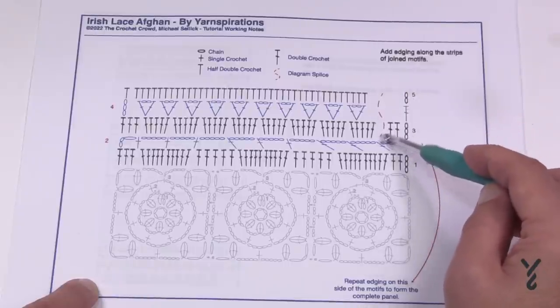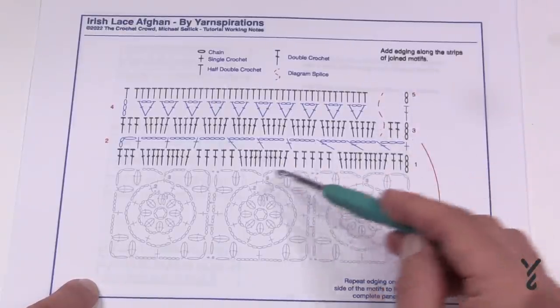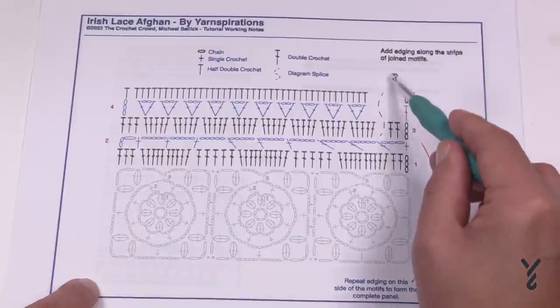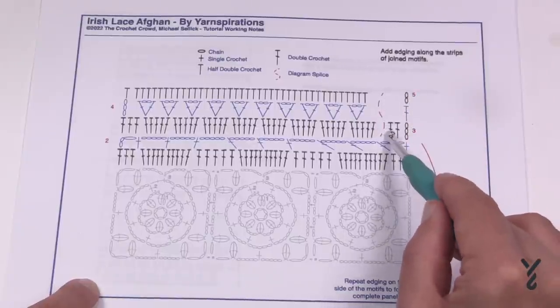So each one of these chain five spaces will have five single crochets. Now I put this in here, this is a diagram splice because there's not 15 here the counts are a little bit off when I show you a small sample like this so I put a line in there just to indicate that it's been spliced up.